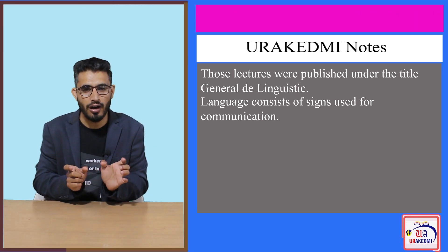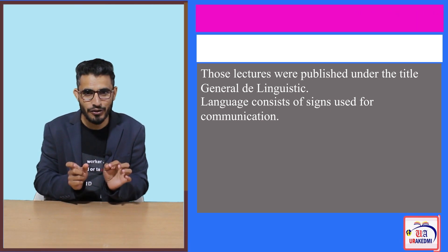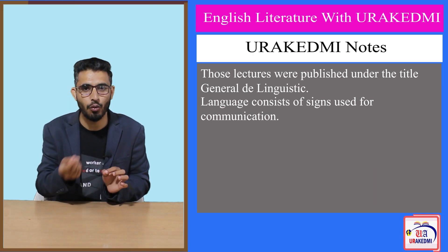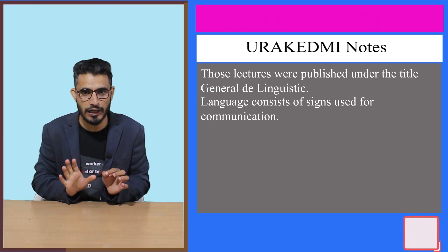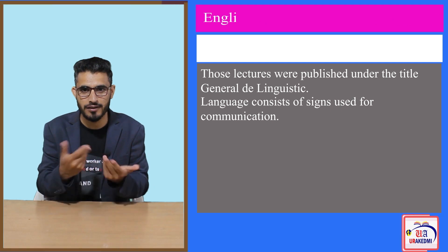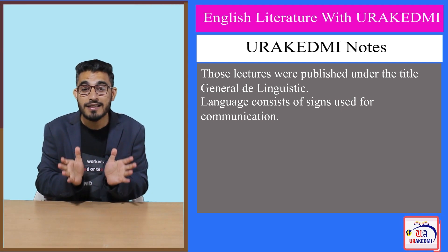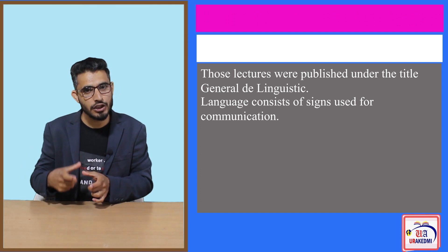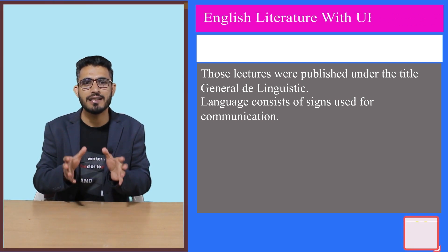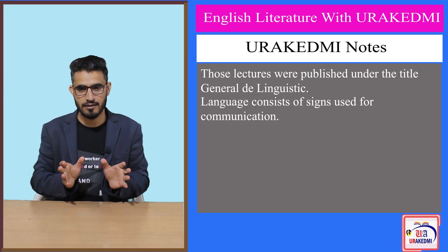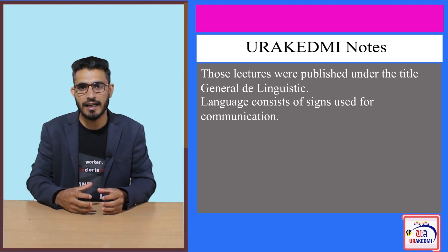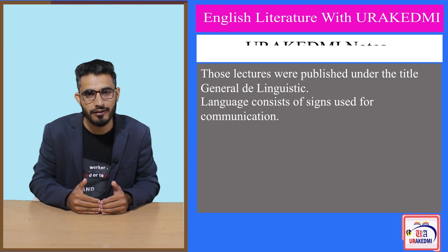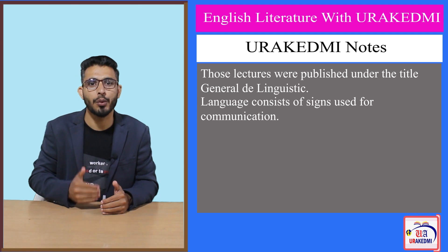So this word that I had put on screen was actually a Chinese word — this is how we write it in Chinese. But since you don't know Chinese, it's a sign. Now you understand what a sign is. So what Ferdinand de Saussure says is that language is but a collection of signs, and these signs are put in a particular structure, and when they are put in a particular structure they give us meaning.